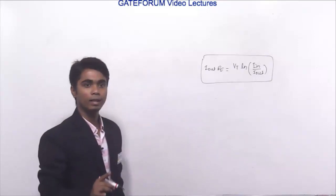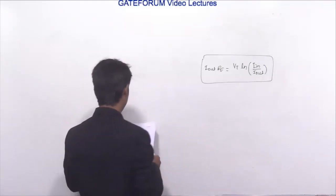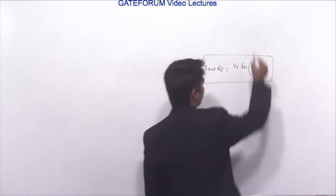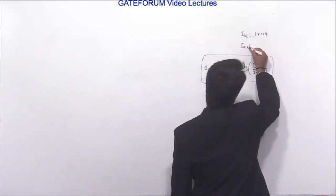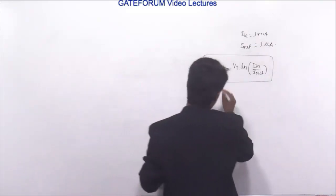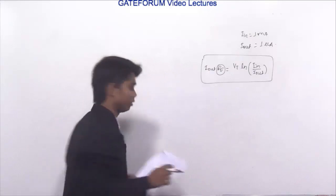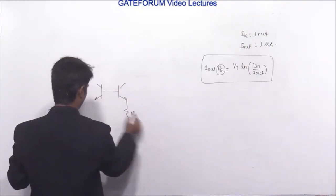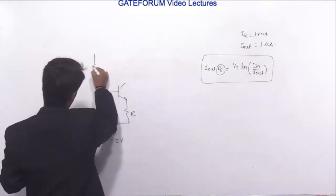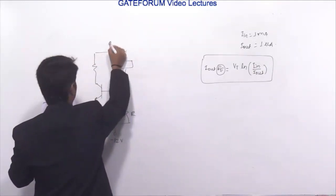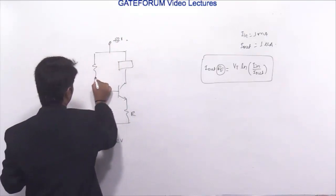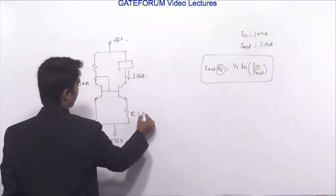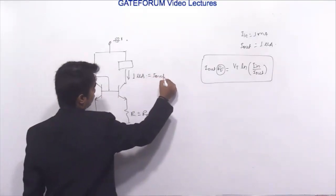Iin is the current flowing through the left transistor, which is 1 milliampere. Iout is 1 microampere as given in the question. Drawing the circuit: there is R, minus 12 volt, a differential amplifier, plus 12 volt, with 1 milliampere input and 1 microampere output. The current through the base is negligible. We want to find Re.